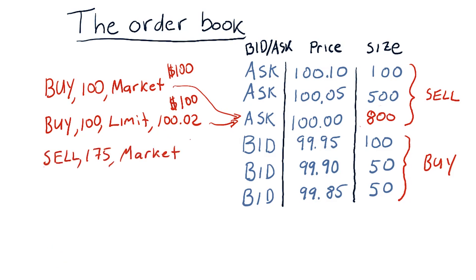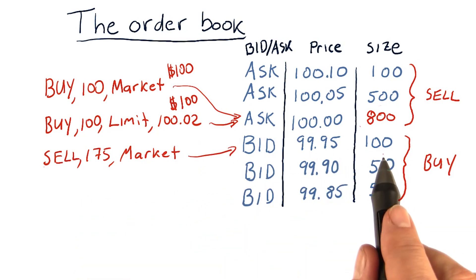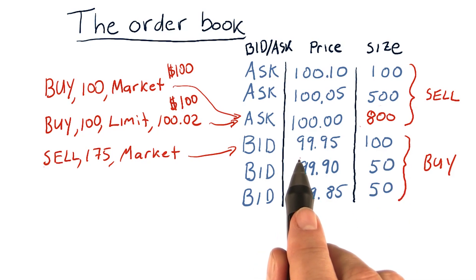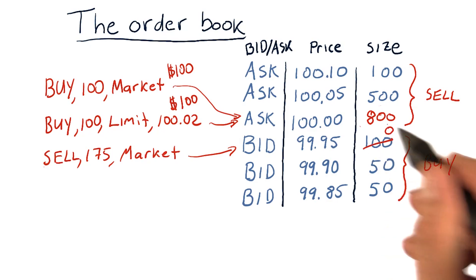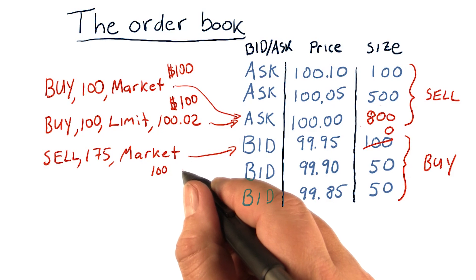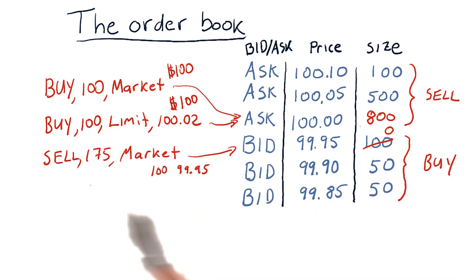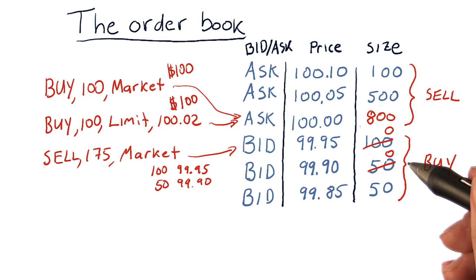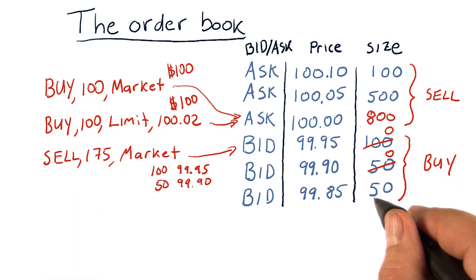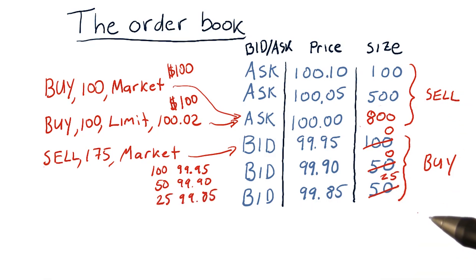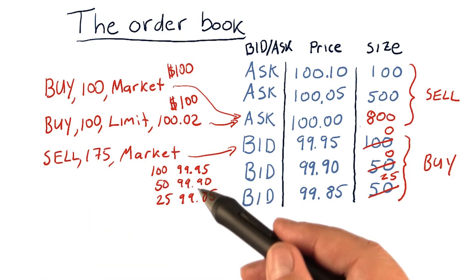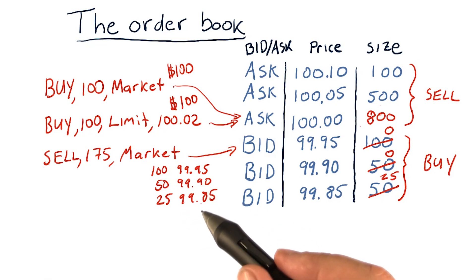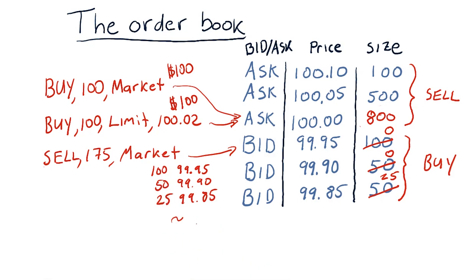Let's look at one last order — a market order where someone wants to sell 175 shares. There are 100 shares available at $99.95, so those get sold and none are left at that price. 100 shares are executed at $99.95. To get the remaining 75 shares, we go deeper into the book and take 50 — zero left there. We still need 25 more shares, so we go even deeper into the book. After all these transactions, the order book has changed quite substantially. This client gets 100 shares at $99.95, 50 at $99.90, and 25 at $99.05 — altogether at some average execution price.